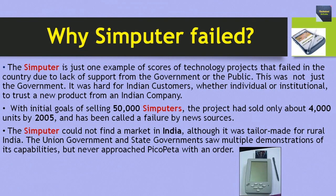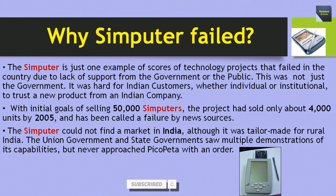The Simputer is just one example of scores of technology projects that failed in the country due to lack of support from the government or the public. It was hard for Indian customers, whether individual or institutional, to trust a new product from an Indian company — even though this Simputer was made in India by Indians. With initial goals of selling 50,000 Simputers, the project had sold only about 4,000 units by 2005 and has been called a failure by different news sources.